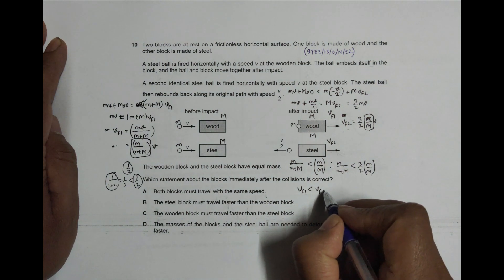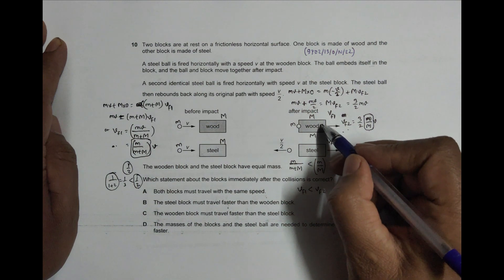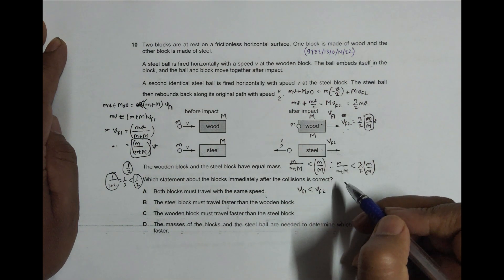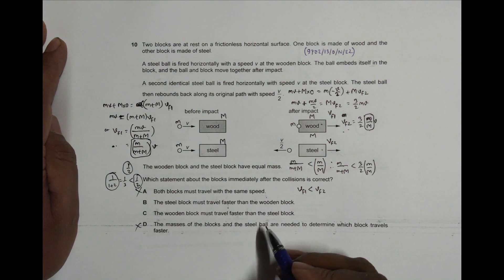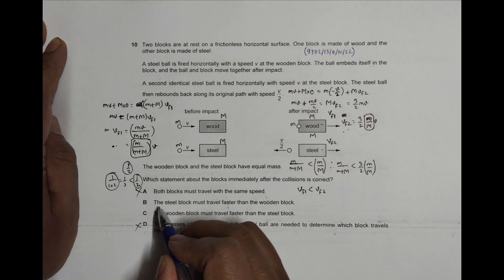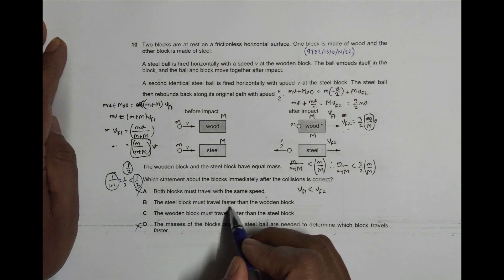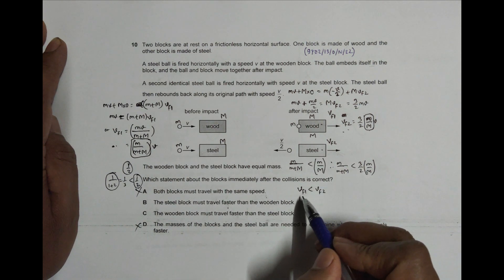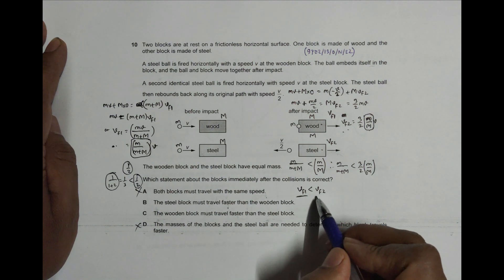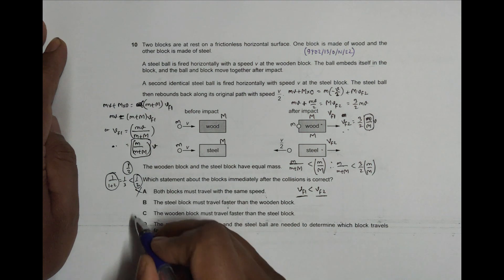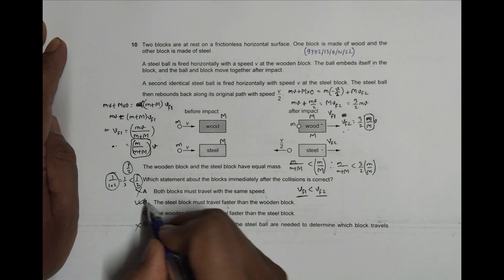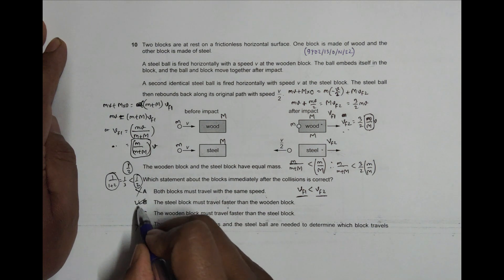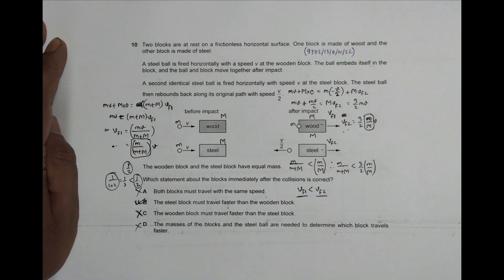Therefore, the wooden block has less speed than the steel block — the steel block travels faster. The first option (same speed) is wrong, the last option (masses needed) is wrong, and the wooden block faster option is wrong. The correct answer is choice B: the steel block must travel faster.